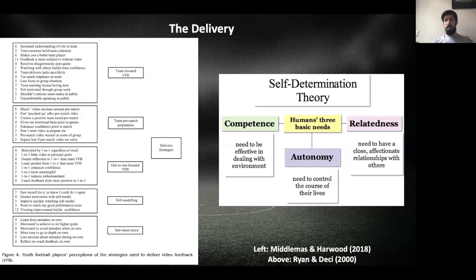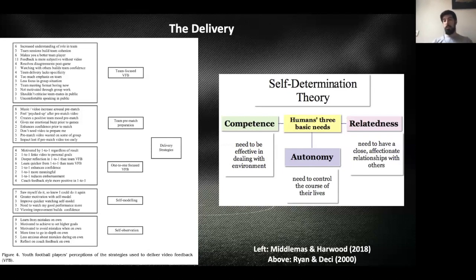On the right-hand side is self-determination theory, which links into how you deliver things. Players need competence, autonomy, and relatedness. For competence — when target setting, they need to feel capable of achieving what you're setting. Relatedness is the relationship you have with them: I can set a target but if they don't care what I think, the target goes out the window. For autonomy, they need to have an input into what the target is — it can't just be me setting it for them. This creates an autonomy-based environment.